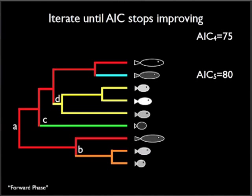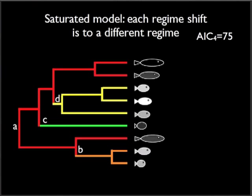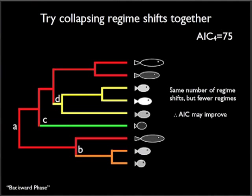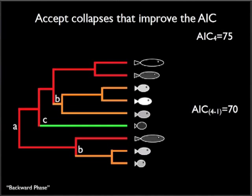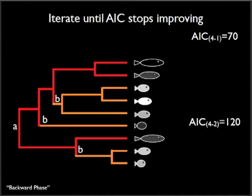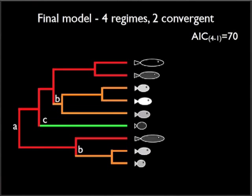We do this until the AIC stops improving, at which point we have some number of shifts in the Hansen model, each of which is to a distinct regime. In the backward phase of SURFACE, we try collapsing regimes one pair at a time into convergent regimes, and these are reached by multiple regime shifts. As models with fewer adaptive peaks have fewer parameters, the AIC may improve further and provide evidence for convergence. So we identify cases of convergence and again continue until the model no longer improves. At the end of the backward phase, we have a fitted model which may include convergent regime shifts.